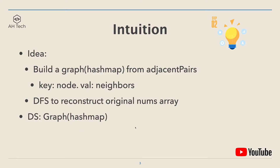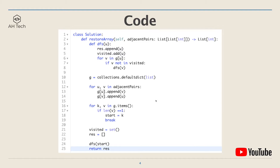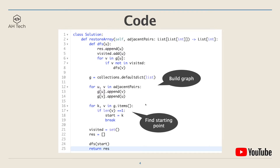Now let's look at the code. The first step is to create the graph hash map. Here we can use Python's collections defaultdict to create a graph g. Then we loop through the adjacent pairs array and append the node and neighbors into g. Next we have to find a starting point — either the head or tail in the nums array. Once we find it, we make it the starting point. We also need a visited set to check which nodes have been visited, a result array to append nodes, and finally DFS into the graph to append nodes and return at the end.